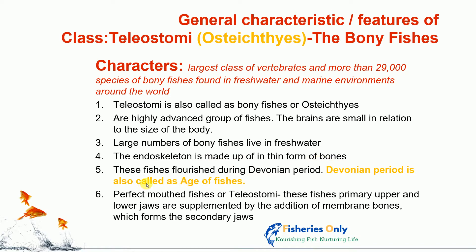Fifth character: these fishes flourished during the Devonian period, which is also called the age of fishes. Sixth character: perfect mouth fishes. As already mentioned, Teleostomi means perfect mouth fishes. In these fishes, the mouth is completely developed. The upper and lower jaws are suspended by additional membrane bones, and these fish form the secondary palate.